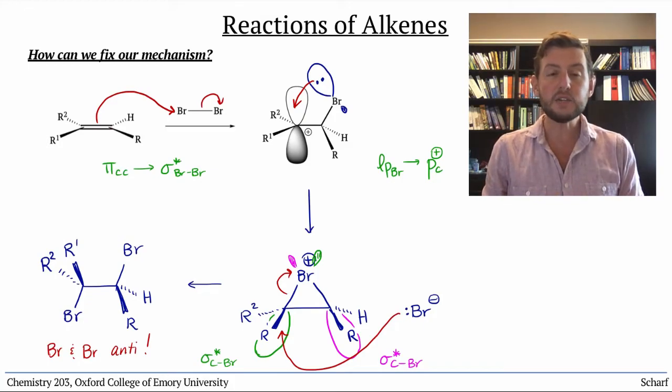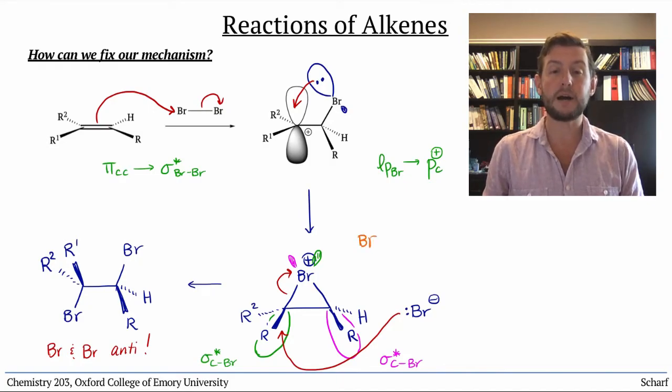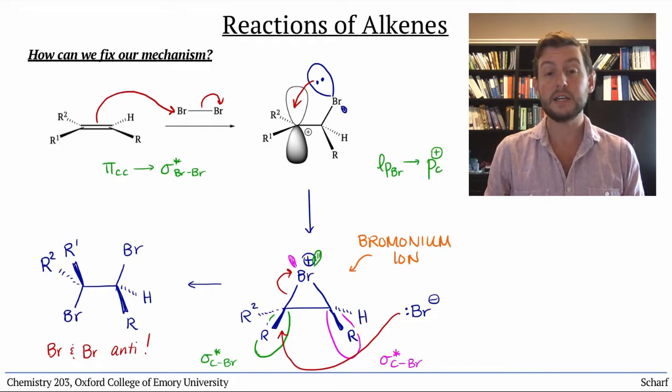This strange three-membered ring intermediate is called a bromonium ion, and people have studied them for years. We know they exist from X-ray crystal structures and mountains of other spectroscopic evidence.